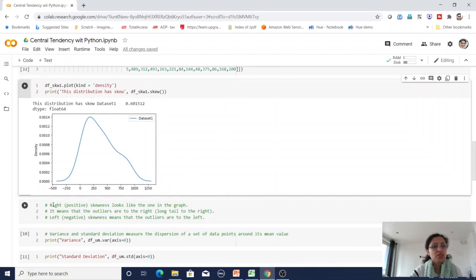We can find out in this graph we have right skewness and we have some little bit of left skewness also. So I have mentioned all the points here.